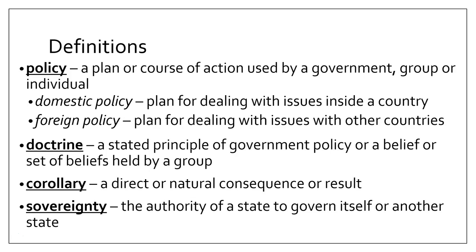Let's look at our definitions. The first word we need to know is policy. A policy is a plan or course of action used by a government, group, or individual. When we're talking about governments, we often refer to two different kinds of policy: either domestic policy, which is a plan for dealing with issues inside a country, or foreign policy, which is a plan for dealing with issues with other countries.